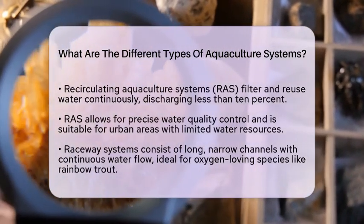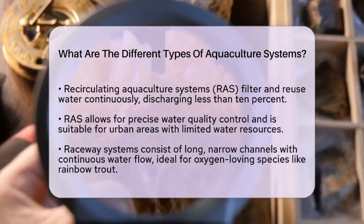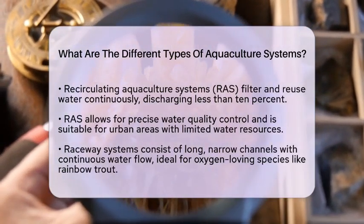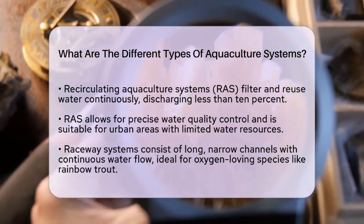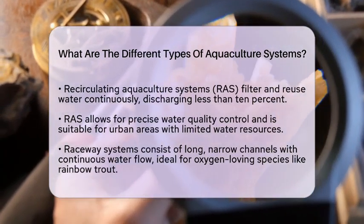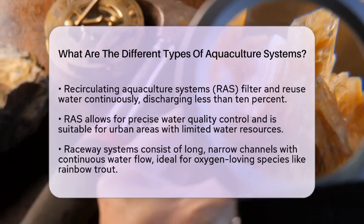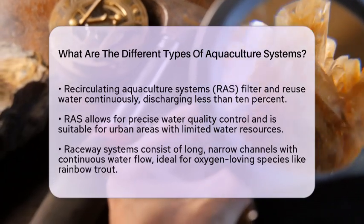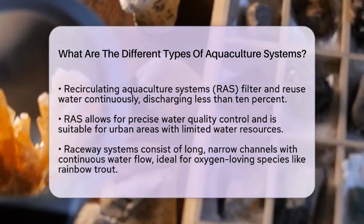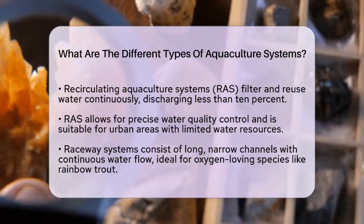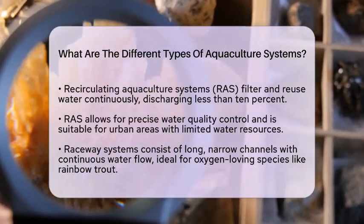Raceways are another interesting system. They involve long, narrow channels where water flows continuously, providing oxygen and removing waste. This system is ideal for species like rainbow trout, which thrive in well-oxygenated water. The closed design helps prevent fish escapes, making it environmentally friendly.